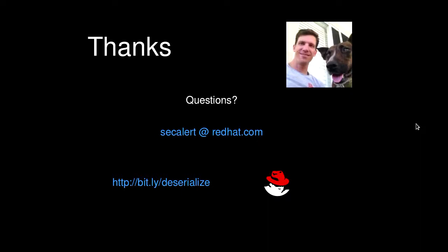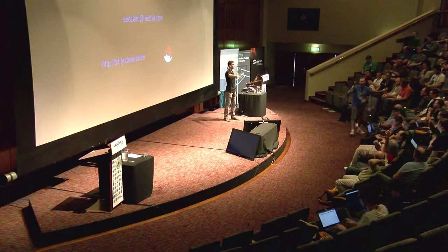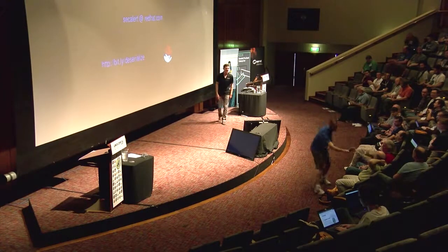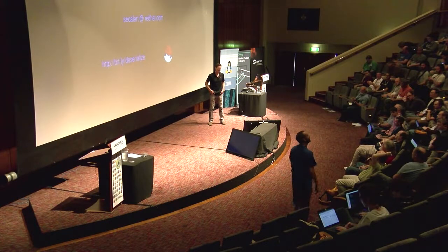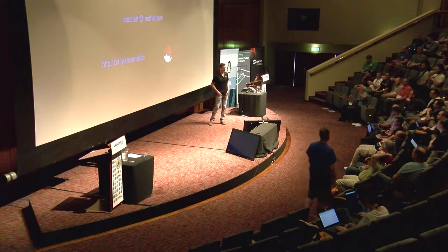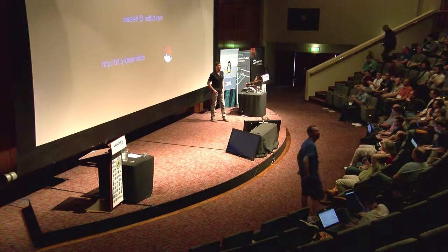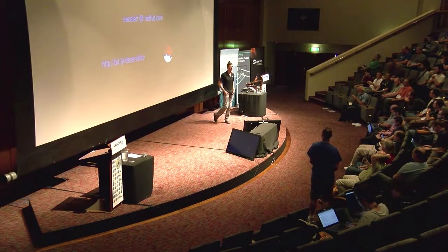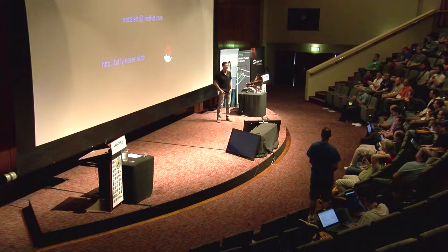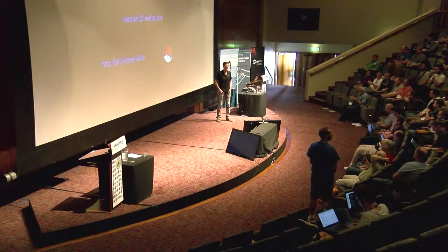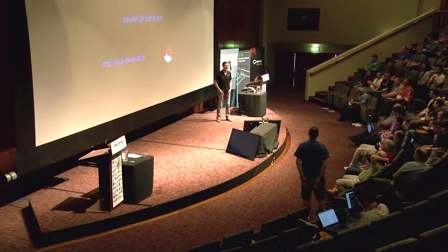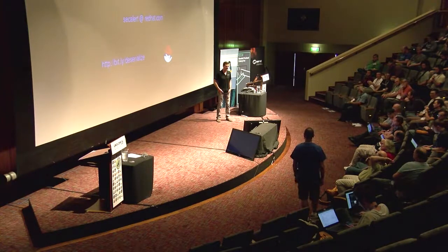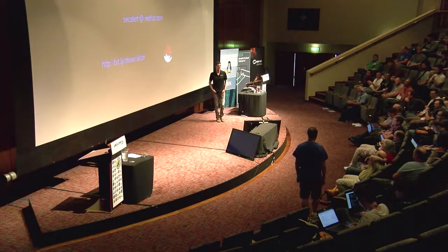That's pretty much it. Any questions? So the first question is: why are people still using Java serialization instead of JSON? Well, it's a bit faster and more efficient perhaps, and maybe just because they have legacy applications they haven't upgraded yet. Is switching away from Java serialization and using JSON just a generally good fix? Definitely — that's the way to go.